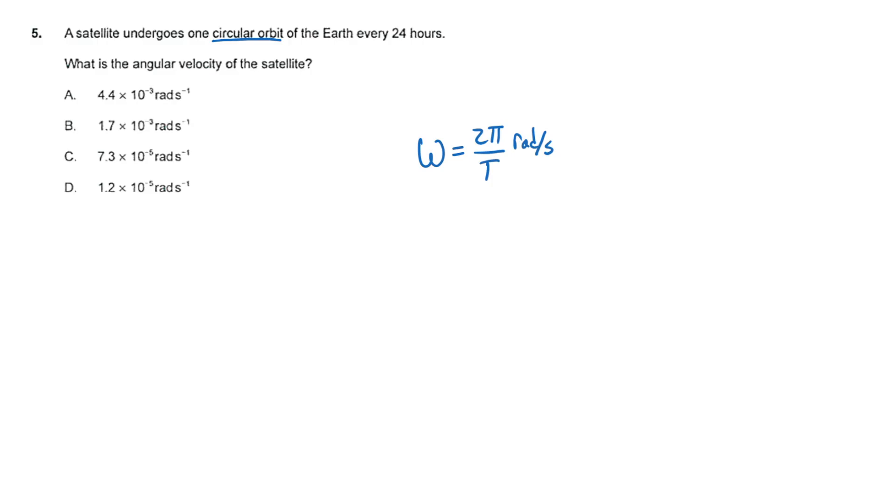We're given the period as 24 hours, so let's convert to seconds. We have 24 hours times 60 minutes in each hour times 60 seconds in each minute, and that gives us 86,400 seconds.